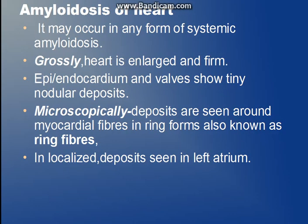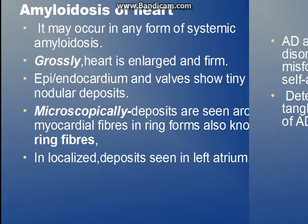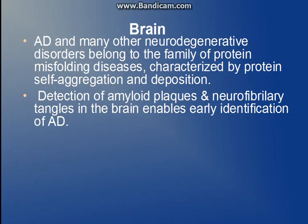Now going to amyloidosis of the heart. The heart is involved in systemic amyloidosis. The heart will be enlarged and firm. Amyloid deposits are seen in the epicardium, endocardium, and walls. Microscopically, it will be seen around every myocardial fiber in a ring form, and therefore these are also known as ring fibers.